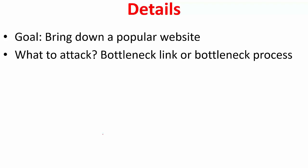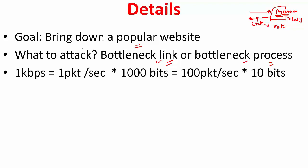Suppose your goal is to bring down a popular website. You, as an attacker, want to attack a web server and bring it down. When you want to bring it down, what do you target — its link or its process? The server does some processing for each request and generates a reply. It is connected to the internet over some link with a certain rate or speed. Do you flood such that this link is saturated and the server is not able to send messages to valid users? Or do you target the process, keeping it so busy that it cannot handle genuine requests? That is the question.